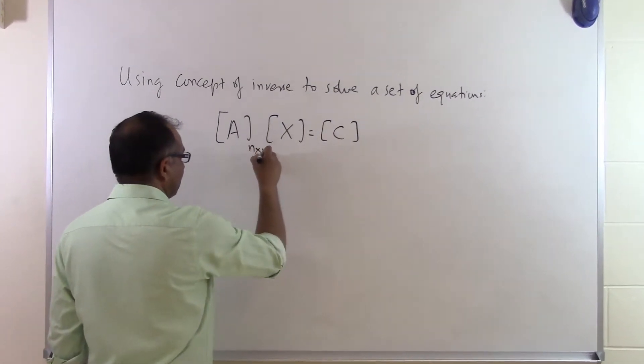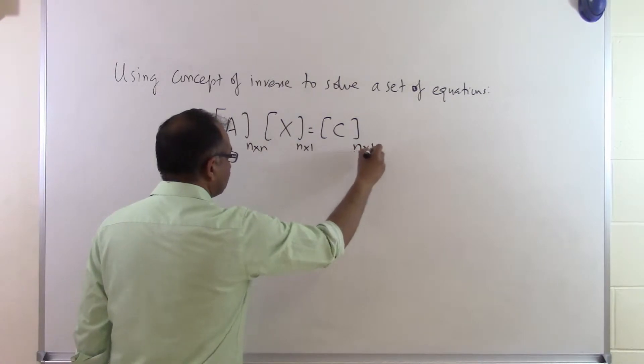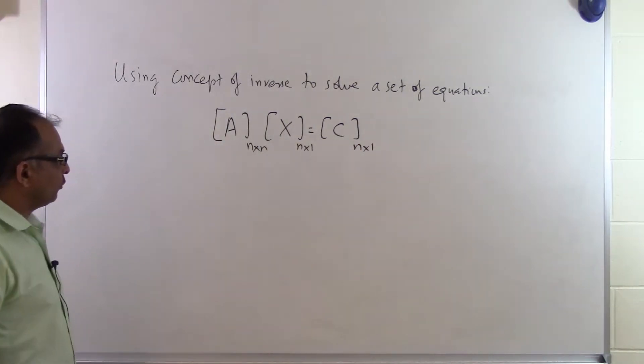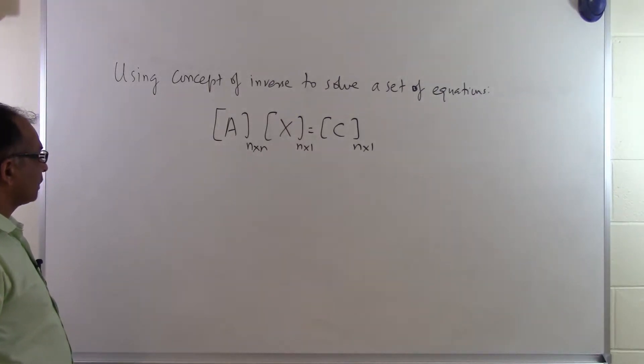So this is n rows, n columns, n rows one column, n rows one column. And says that hey, I am going to give you the inverse of A, which means that he or she is telling you that the A inverse does exist.